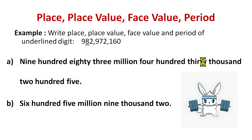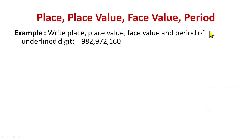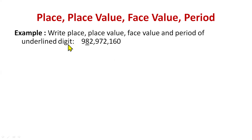Now let's cover place, place value, face value, and period. In exams you'll get a question like: write the place, place value, face value, and period of an underlined digit. Place means the position of the digit. Place value means you write the value with the place. Face value is simply the value of the digit itself — like eight, so face value is eight. Period means the house — ones house, thousands house, or millions house.